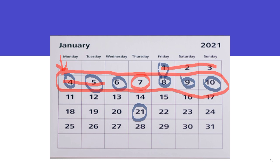It will be shocking to you to find: oh, I had sex immediately after my menses — I shouldn't be pregnant, but I am pregnant.